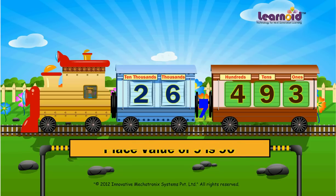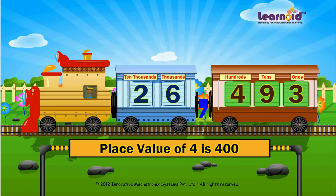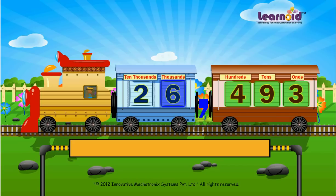Number 4 is in the 100's window. Its place value is 400. Number 6 is in the 1,000's window. Its place value is 6,000.